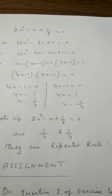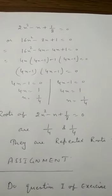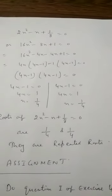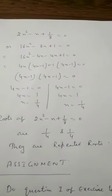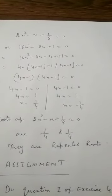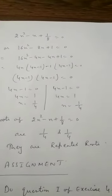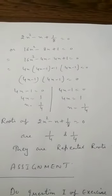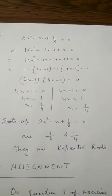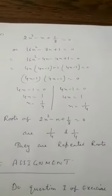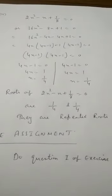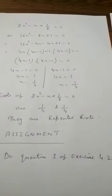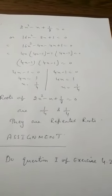So the roots of this equation 2x squared minus x plus 1 by 8 is equal to 0 are 1 by 4 and 1 by 4, and they are repeated roots. In this way, we are able to find the roots of a quadratic equation by factorization. In your home assignment, you will do the first question of Exercise 4.2. Thank you.